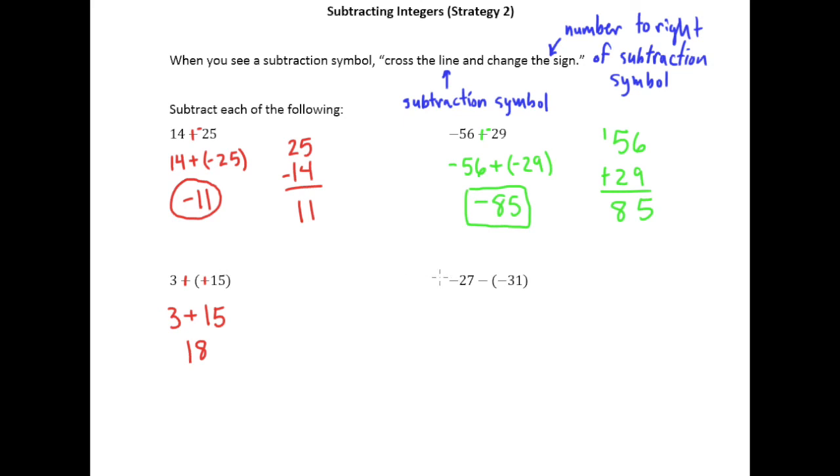Moving over here, same thing: this is a negative, this is a negative, this is a subtraction symbol. So I'm going to cross the line, change the sign. So this becomes negative 27 plus 31. And then negative 27 plus 31, we need the difference of those two absolute values. And the answer of course is 4.